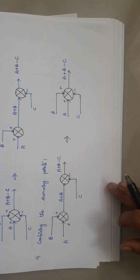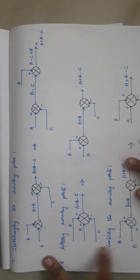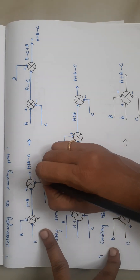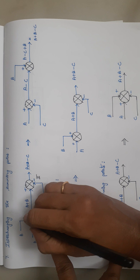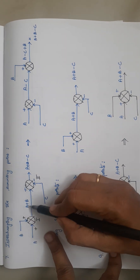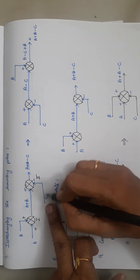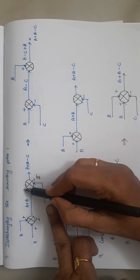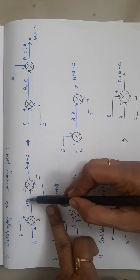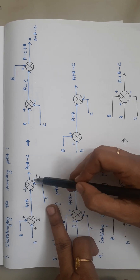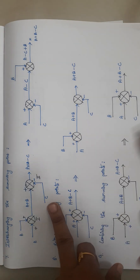The next rule is interchanging the summing points. Here summing point 1 has inputs A and B (both positive), giving output A + B. This feeds into summing point 2, where C is a negative input, giving A + B − C. Now we interchange the positions: summing point 2 comes first and summing point 1 comes next.